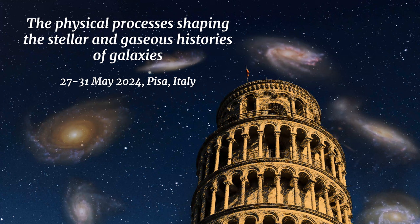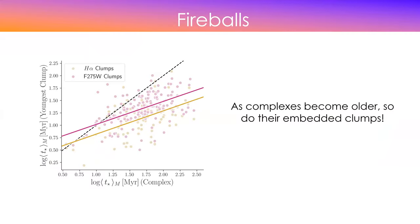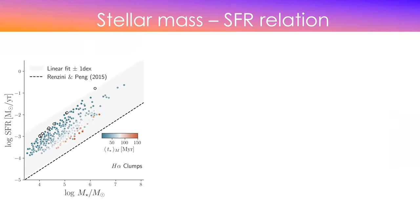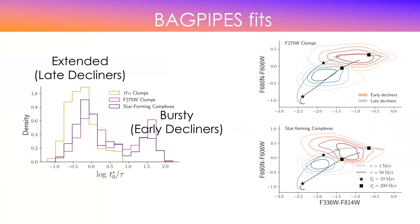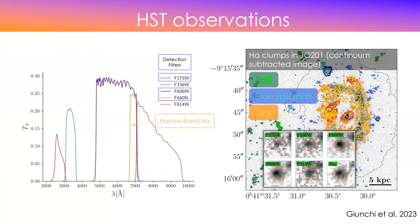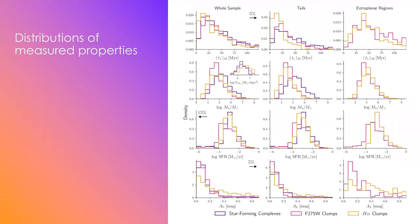A question about why you have star formation closer to the galaxy that is older than that further away. It's because of how different phases of gas in the galaxy are stripped. The less dense phases of the interstellar medium won't form stars immediately. But the denser molecular gas will form stars very near the galaxy, forming big clouds with lots of star formation near the galaxy for a long time.